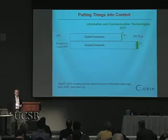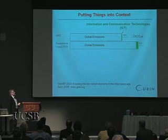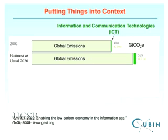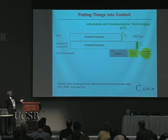To put things in context, this is data from the Smart 2020 report published late last year. In 2002, global emissions from all sectors are represented by the length of one bar, and the green bar represents the small contribution by information and communications technologies — a few percent. With business as usual, global emissions in 2020 will grow, and ICT's contribution will still be a small part of the total.